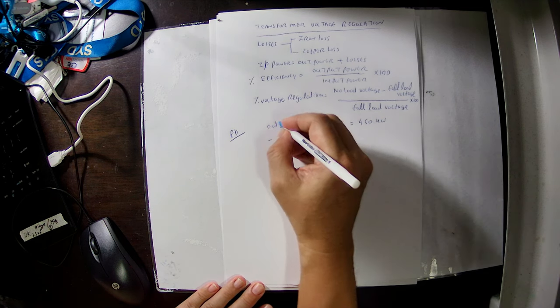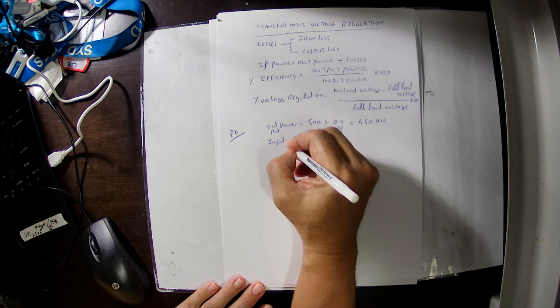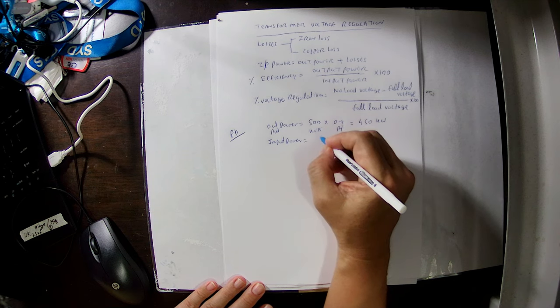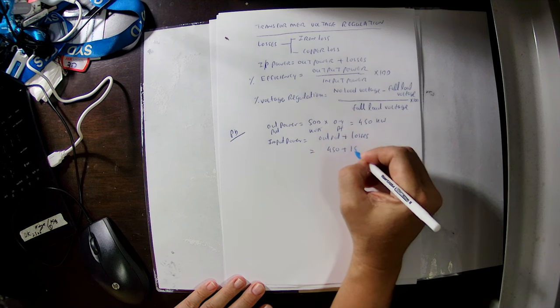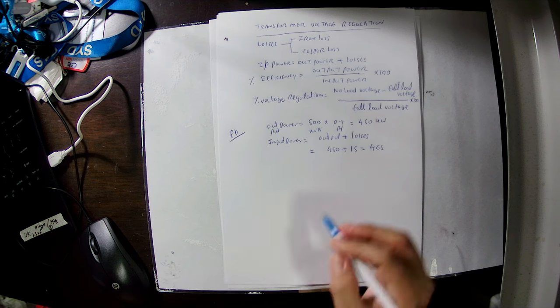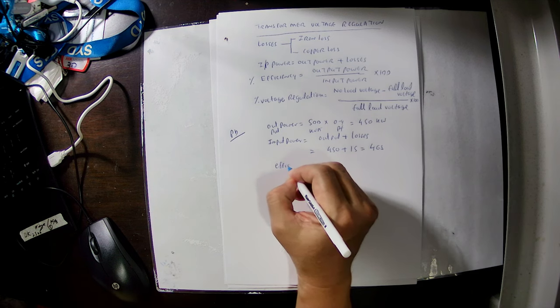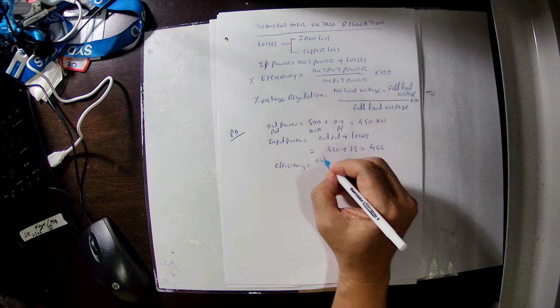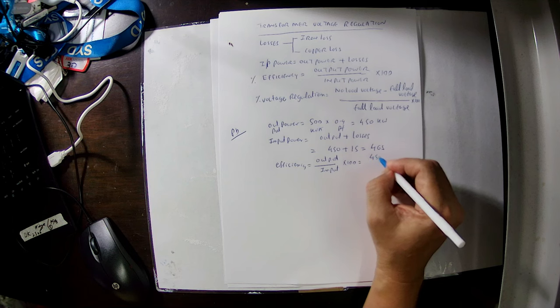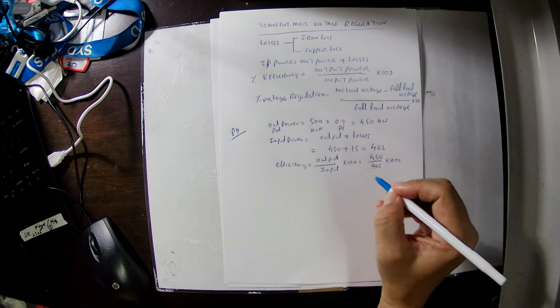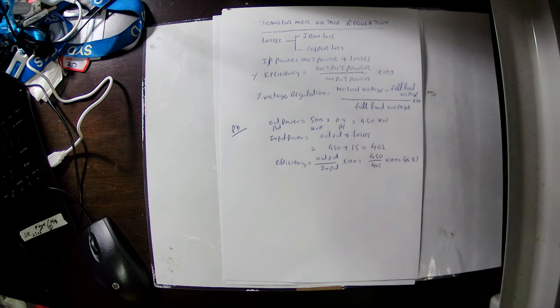Input power equals output power plus losses: 450 plus 15 equals 465 kW. Then efficiency equals 450 divided by 465, multiplied by 100, giving 96.8%. This is the way we calculate transformer efficiency.